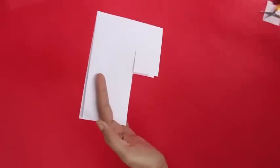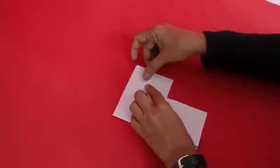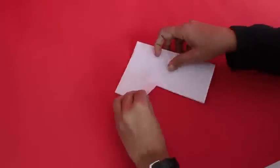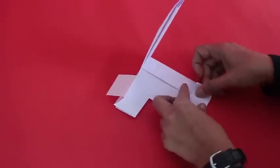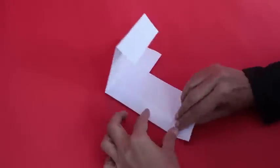And then fold the tail wings. These are the two tail wings and these are the main wings. Slightly fold them inwards.